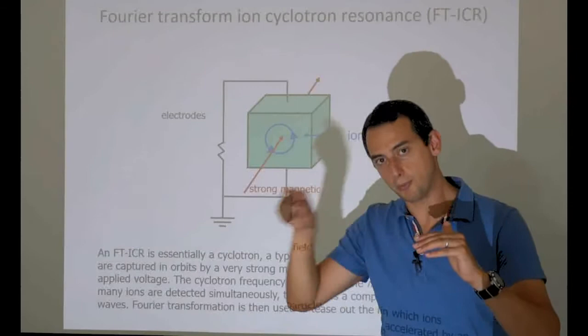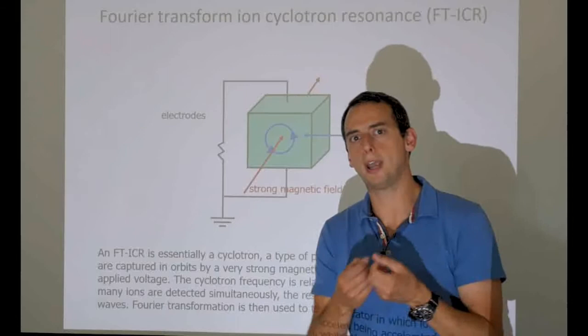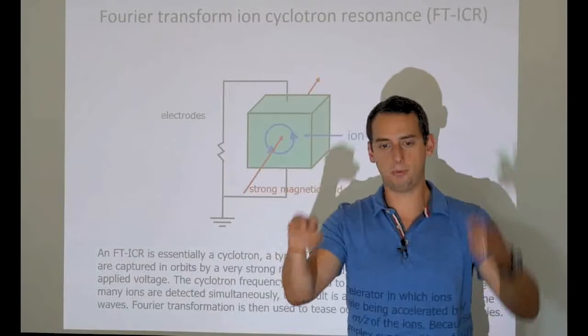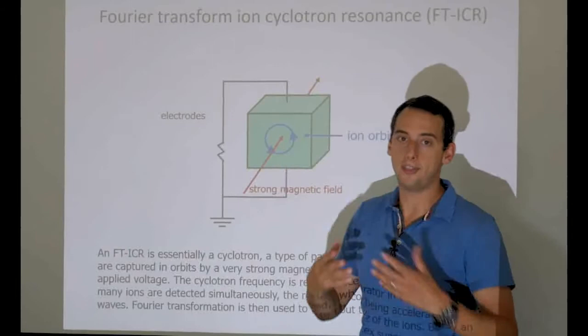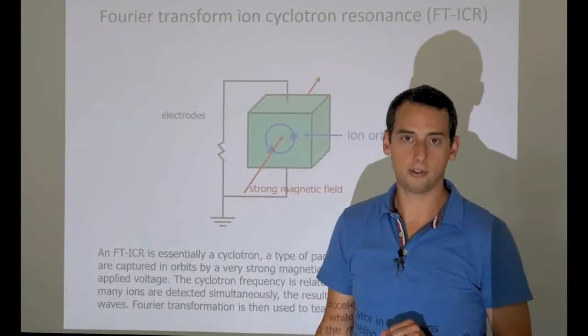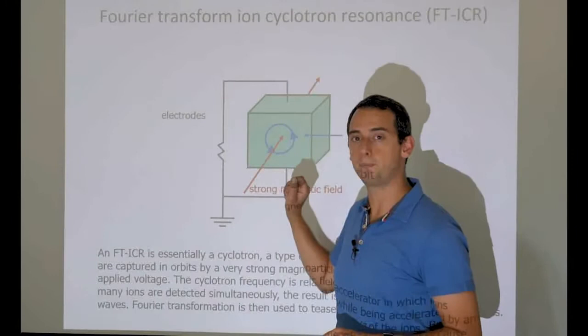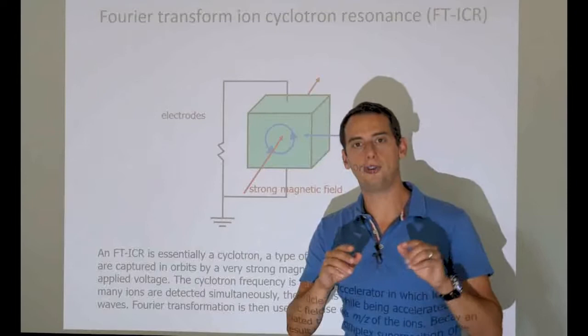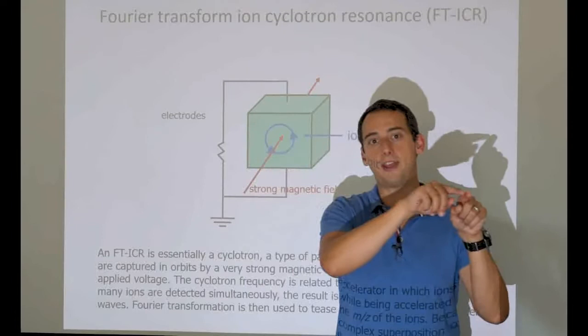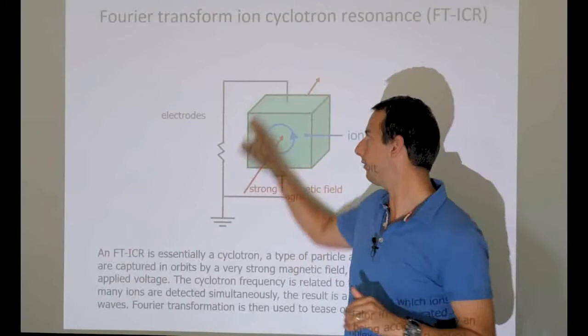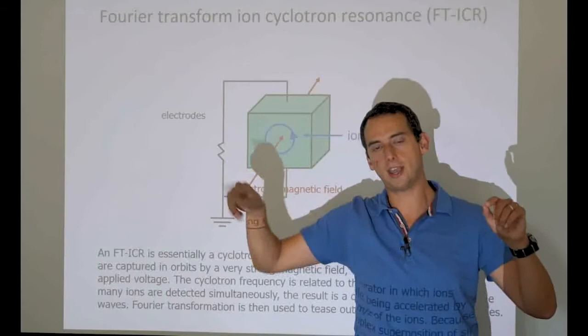If we had a pure ion, a pure m/z in there, this would be really easy—we'd just look at the spectrum, measure the distance, and calculate the m/z. However, usually there will be many more ions with different masses in the cyclotron. The result is a superposition of signals: the slow ion that goes beep, beep, beep, and the fast one that goes beep, beep, beep. The total net signal from our electrodes is the superposition of all these signals—a huge jumble.